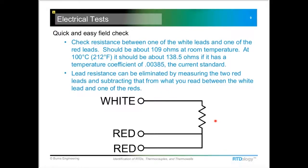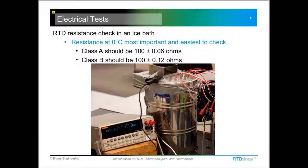And now that resistance, if it's what's called a Class A sensor, should be 100 ohms plus or minus .06. If it's a Class B, it'll be 100 plus or minus .12, and that's at the ice point.